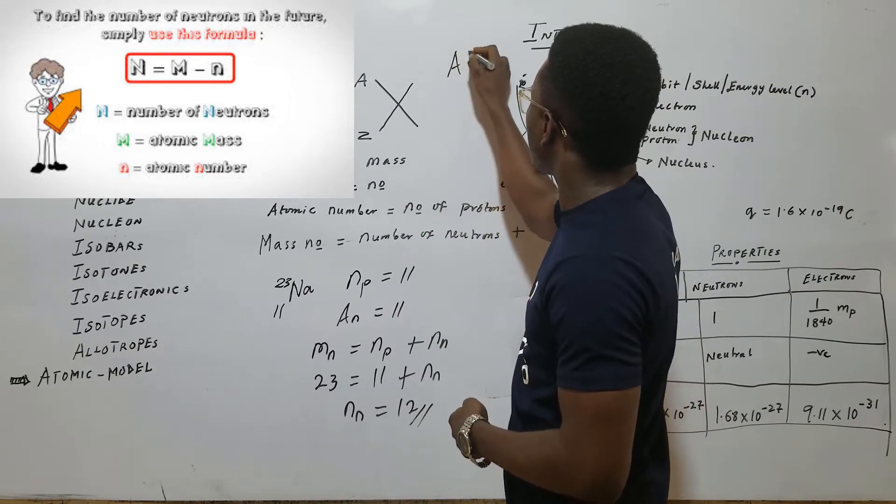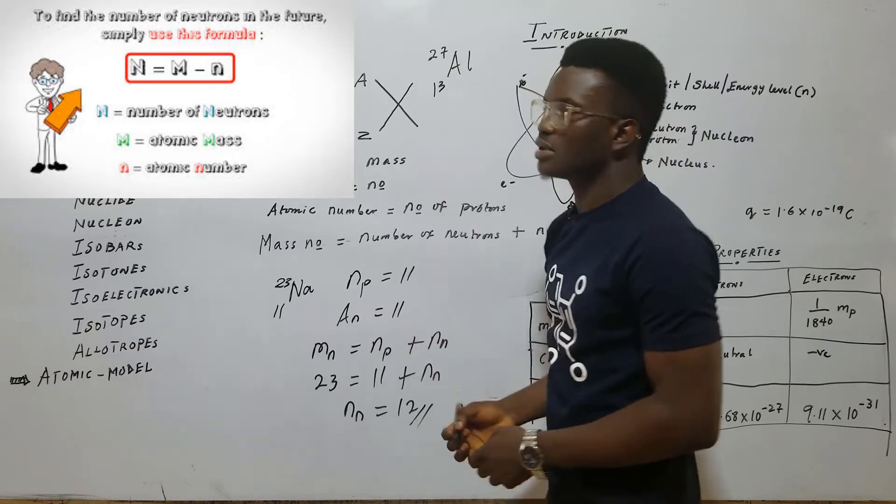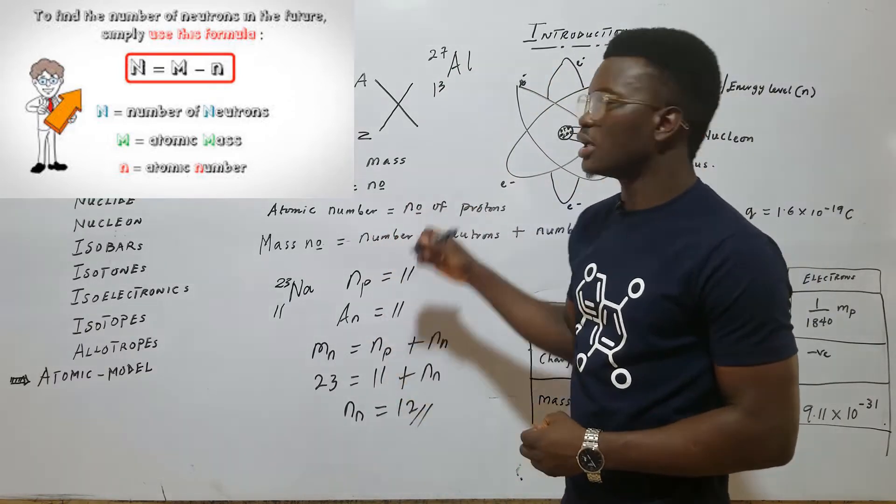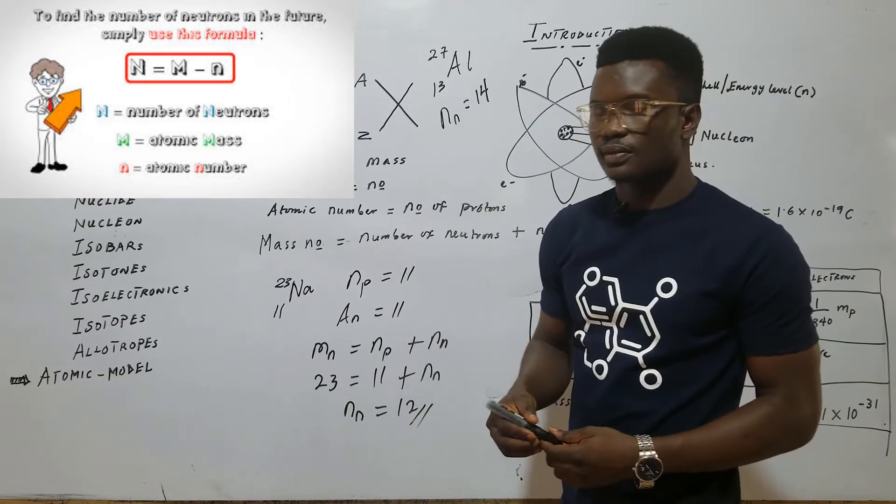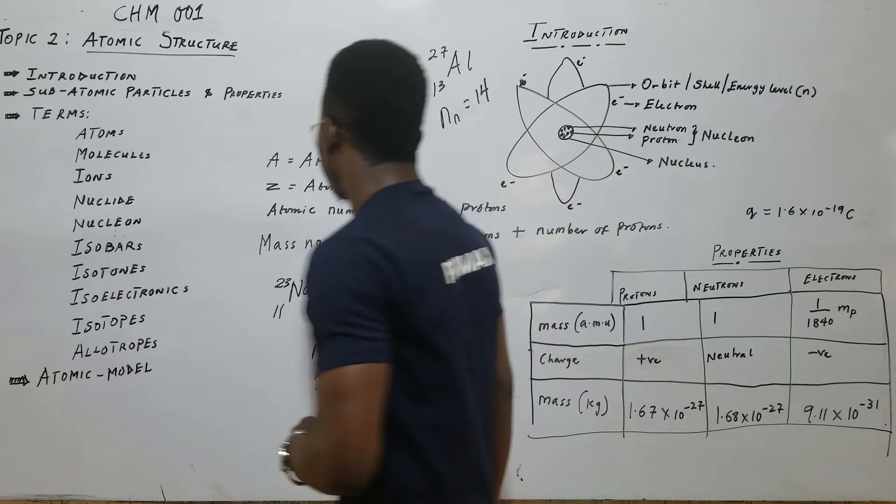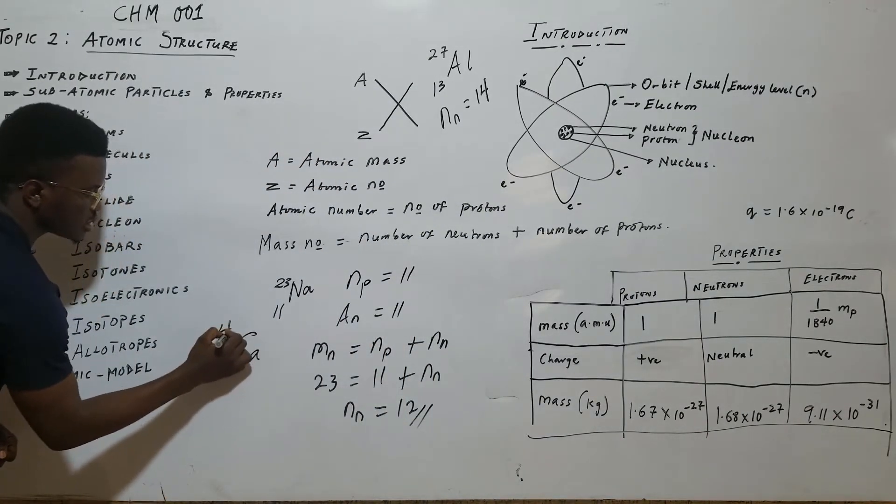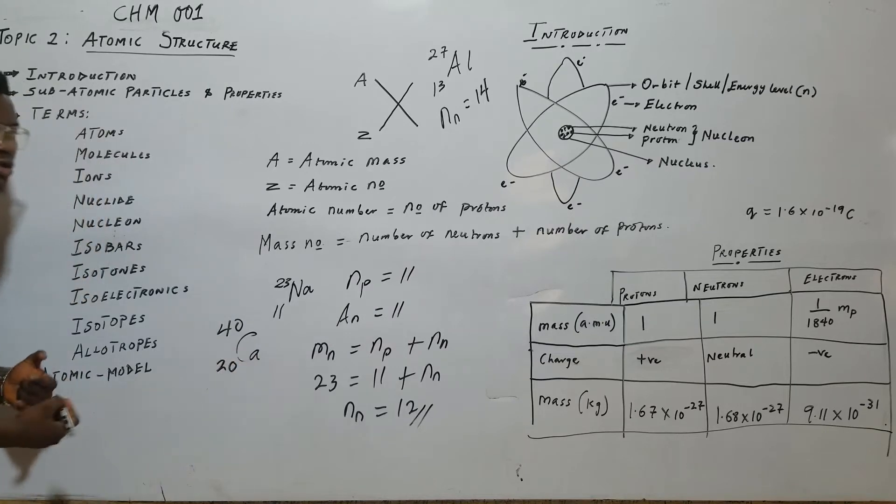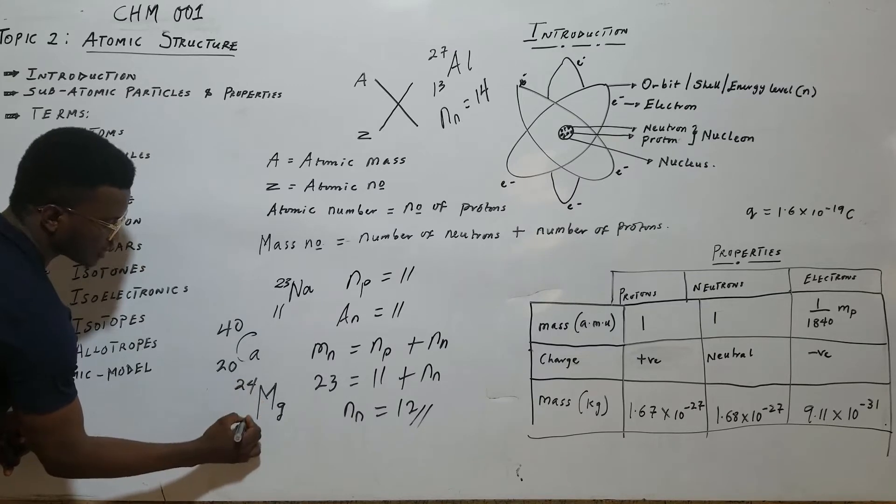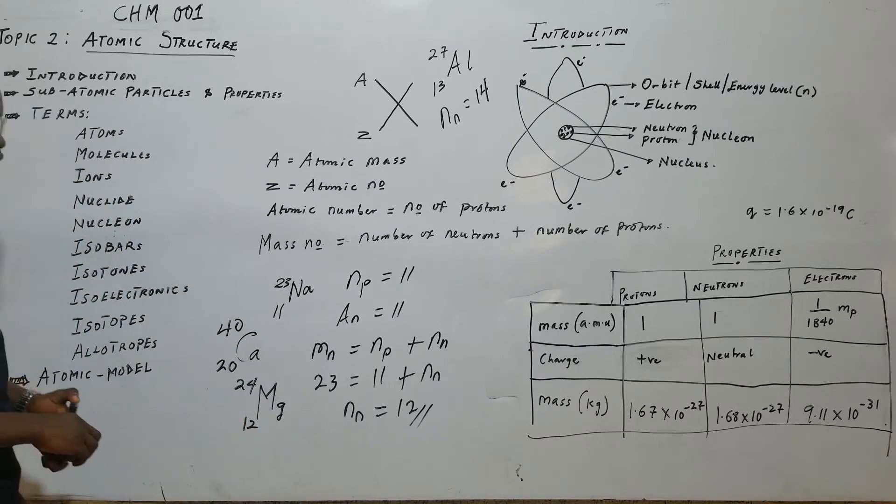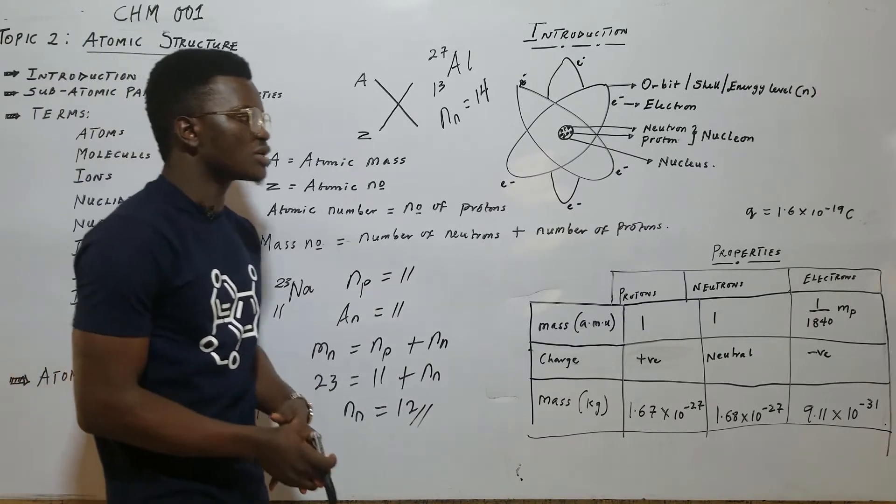Take another example. If I have aluminum 27 with atomic number 13, the number of neutrons for this aluminum is 14. Looking at this other example, let's look at calcium 40 with atomic number 20, magnesium 24 with atomic number 12. So, you can determine the atomic number, the number of protons and the number of neutrons as well as the mass number.